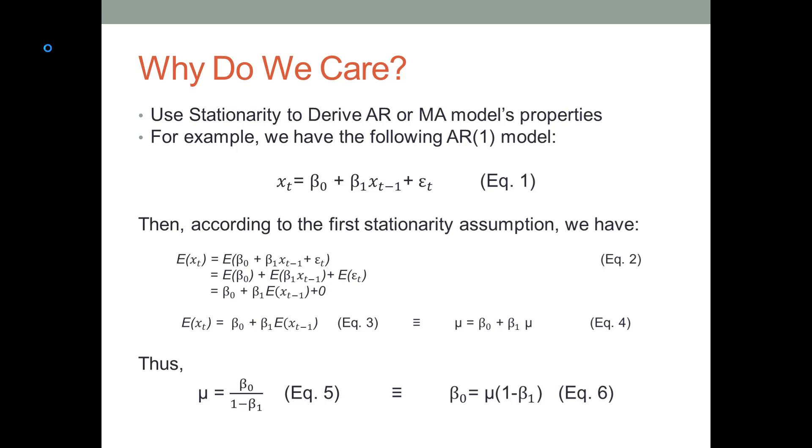x_t is today's sales revenue we are trying to predict. β_0 is the intercept of the linear model. β_1 is the coefficient. x_{t-1} is yesterday's sales revenue. ε_t is the error term of this linear model.